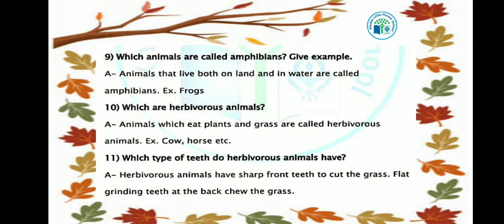Which animals are called amphibians? Give examples. Animals that live both on land and in water are called amphibians. For example, frog, newt, and salamander — all of these are amphibians.